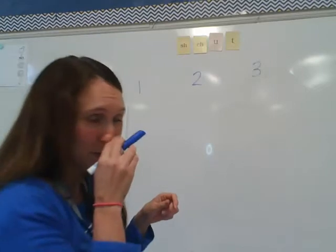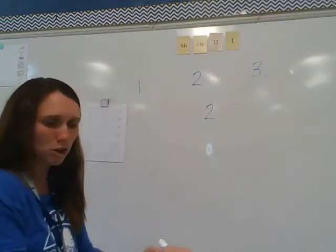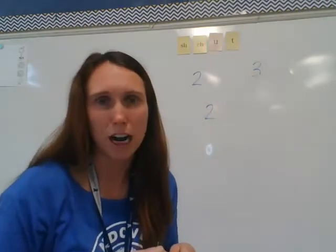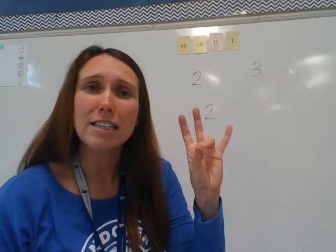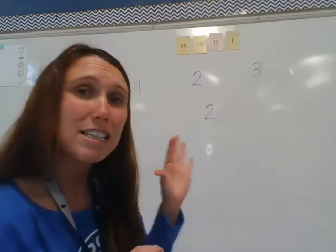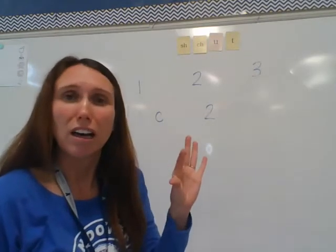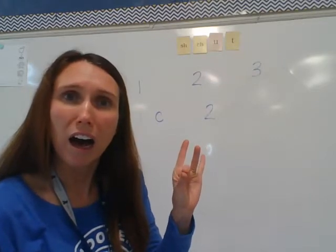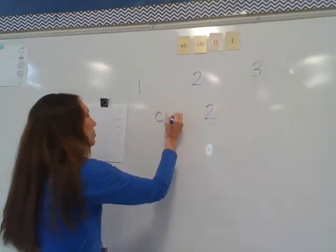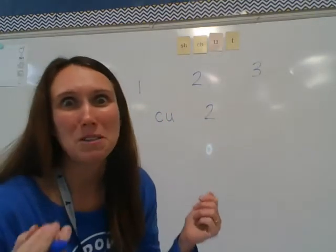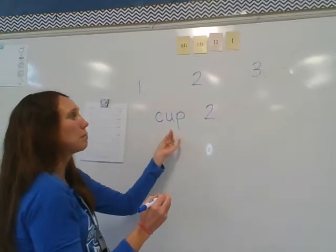So the next ones I'm going to do with you — it says review words. These words are words that you should be able to spell because they're from our last chapter. The first word is CUP. The first sound is K — it is a C that starts that word. Then the uh sound — what makes the uh sound? U. And that last sound: P. C-U-P. Cup.